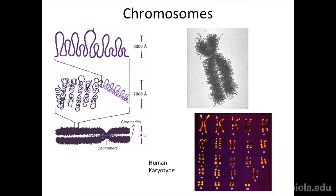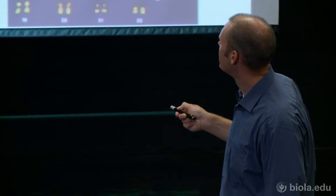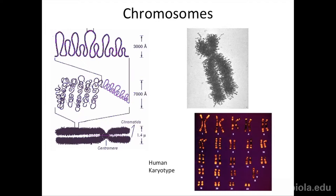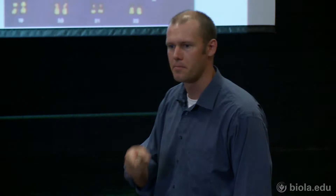Those loops get looped on each other as well — folded again. This level of organization requires even more additional proteins to hold it at this level. The DNA itself is not going to want to wind like this; proteins have to impinge and hold those loops. Then those loops of loops are looped again, and now we're getting to the level of what you can actually see under the light microscope.